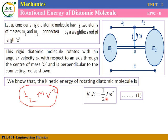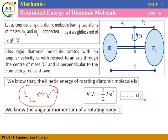The kinetic energy of the rotating diatomic molecule is one half times I times omega squared — this is equation number one. Similarly, the angular momentum of the rotating body L is equal to I omega — equation number two.